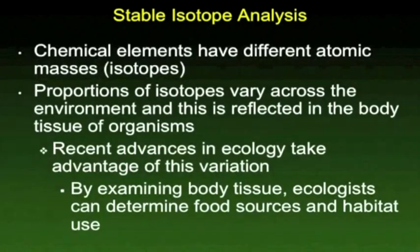Another approach that some researchers take is called stable isotope analysis, and here you get to use all of that wonderful chemistry you've learned. There is a ratio of different isotopes — elements that have different atomic masses — that's unique to various areas or types of foods. So if an organism is feeding on a type of leaf, you can track that based on the ratio of isotopes in that organism and actually get some idea of where the organism has been and what it's been eating.